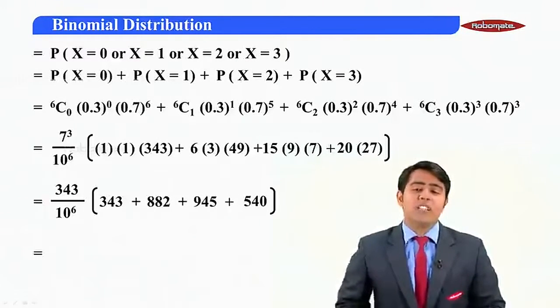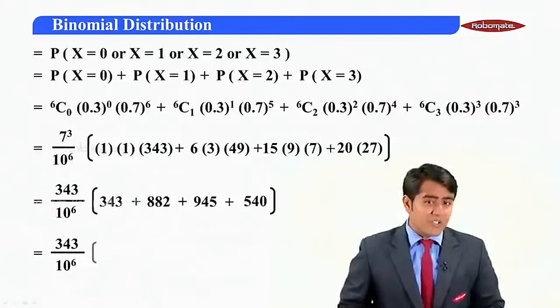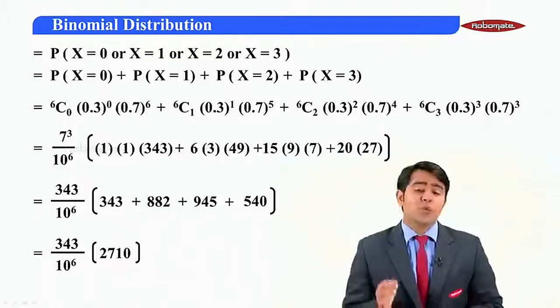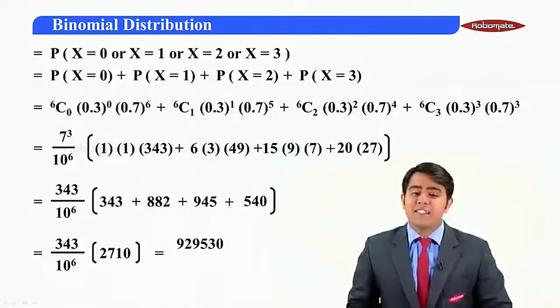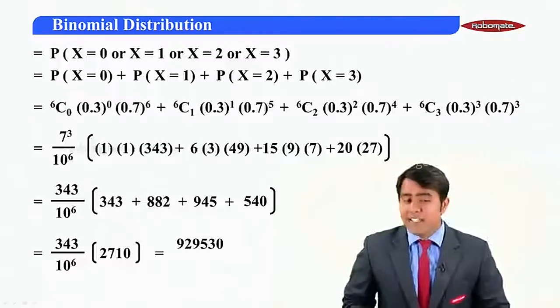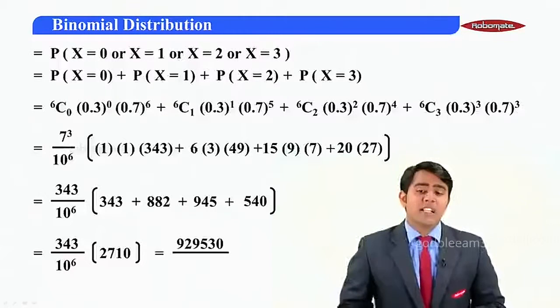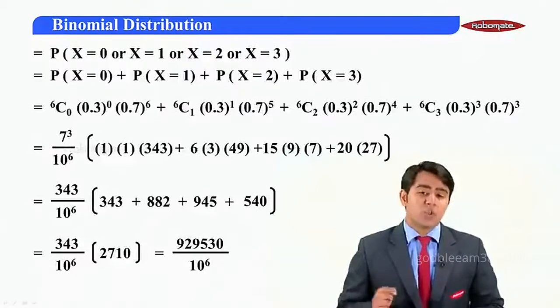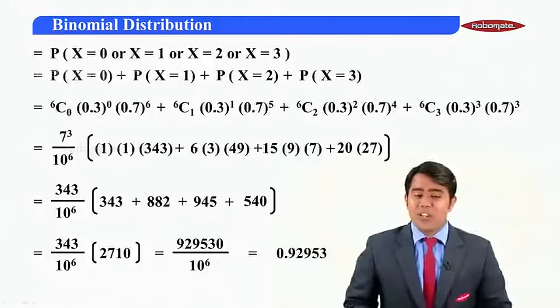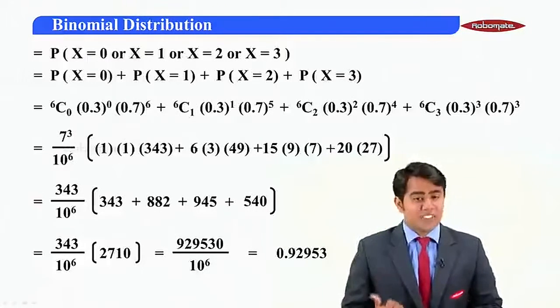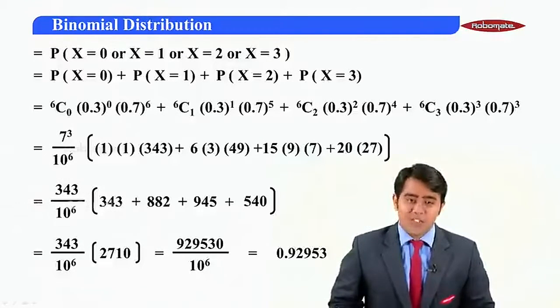Now, on adding all these terms, I get the value as (343/10^6) multiplied by 2710. So on further multiplication, I get the value as 929530/10^6. So when I keep the decimals here, I get the answer as 0.92953. So this is the probability that the classroom cannot be used.